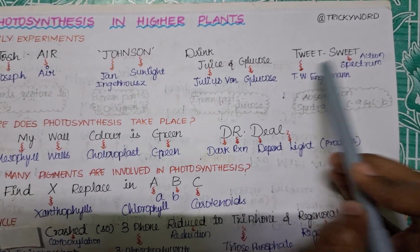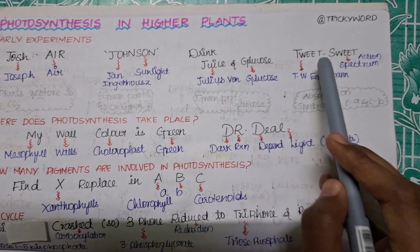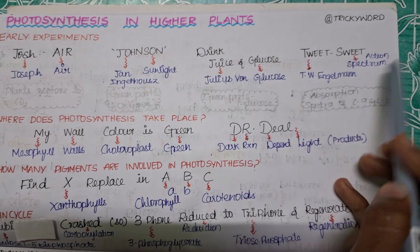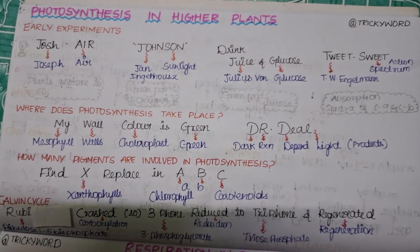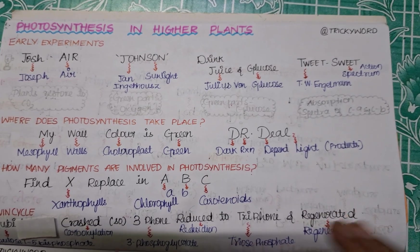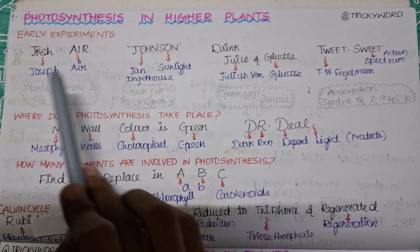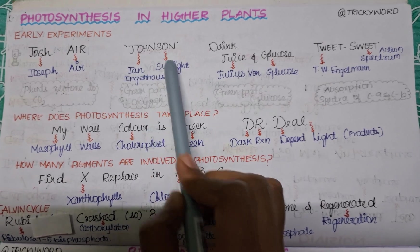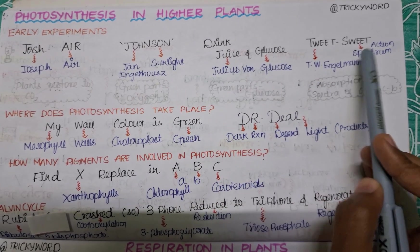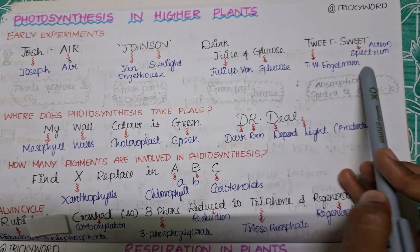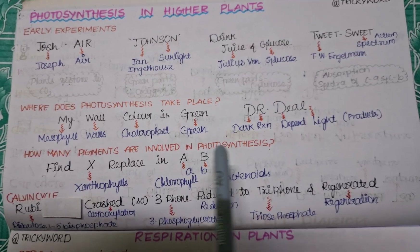The next trick is 'Tweet Sweet.' T and W stand for T.W. (Engelmann's initials), and 'Sweet' stands for Action Spectra. T.W. Engelmann is the one who used a prism to split light, and he found the absorption spectra of chlorophyll A and chlorophyll B. To summarize: Josh Air = Joseph/Air; Johnson = John/Sunlight; Juice and Glucose = Julius/Glucose; Tweet Sweet = T.W. Engelmann/Action Spectra.